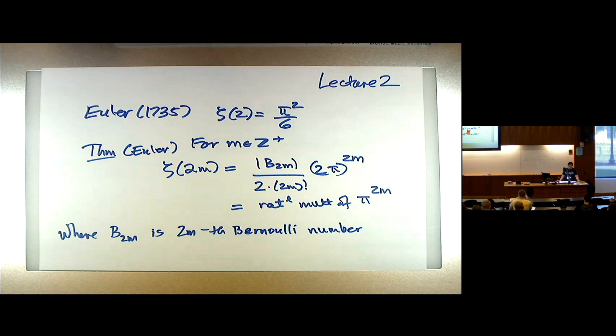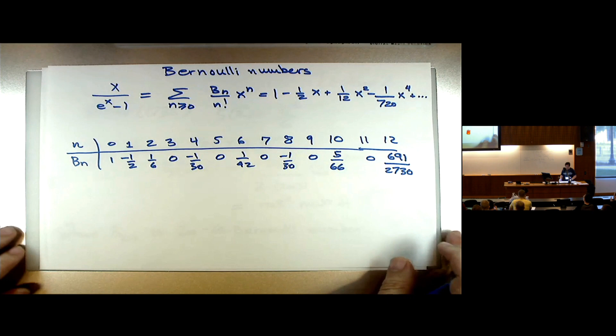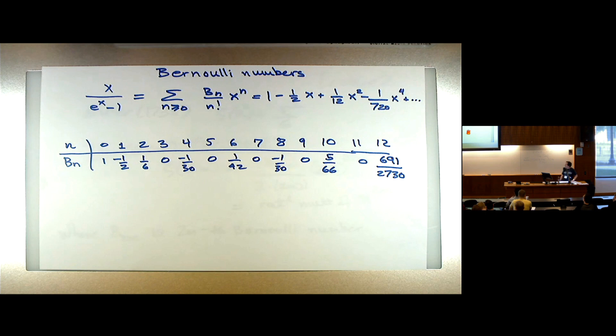So what are the Bernoulli numbers? They are essentially the coefficients of x over (e^x − 1), but you divide by n factorial. So the exponential generating function of the Bernoulli numbers is x over (e^x − 1). I've written out the first few terms. So b_1 should be −1/2. b_2 over 2! should be 1/12, so b_2 is 1/6. b_3 should be 0 because there's no cubic term.